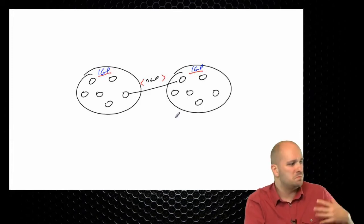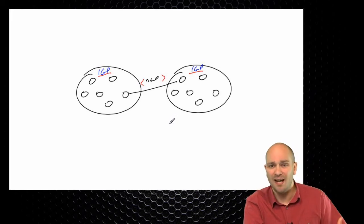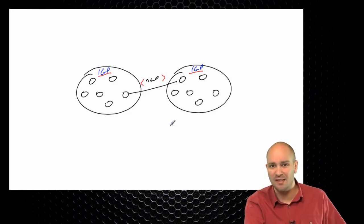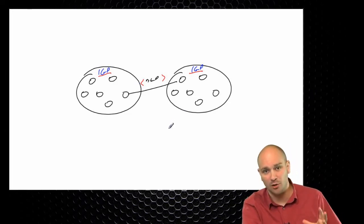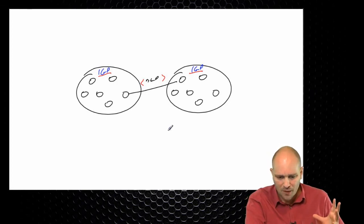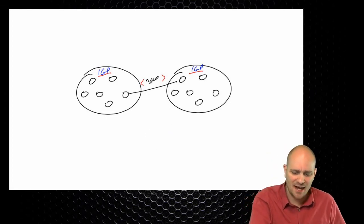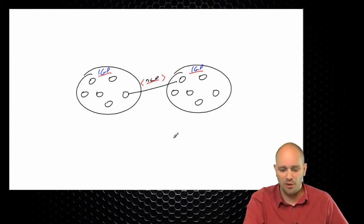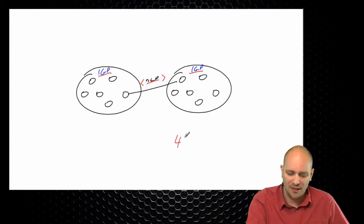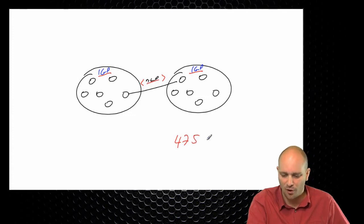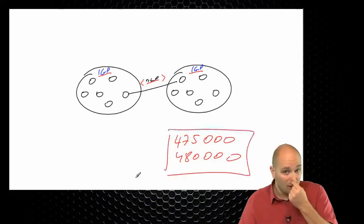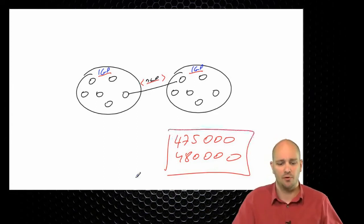IGPs are designed to carry maybe a couple hundred, maybe a couple thousand routes. With some routing protocols, when you reach 15,000 to 20,000 routes, they may begin to struggle. But BGP is designed to carry a large number of routes. At the moment we are doing this, our BGP routing table has somewhere around 475,000 — maybe even more — routes. This is the full BGP routing table, a really large number of routes.